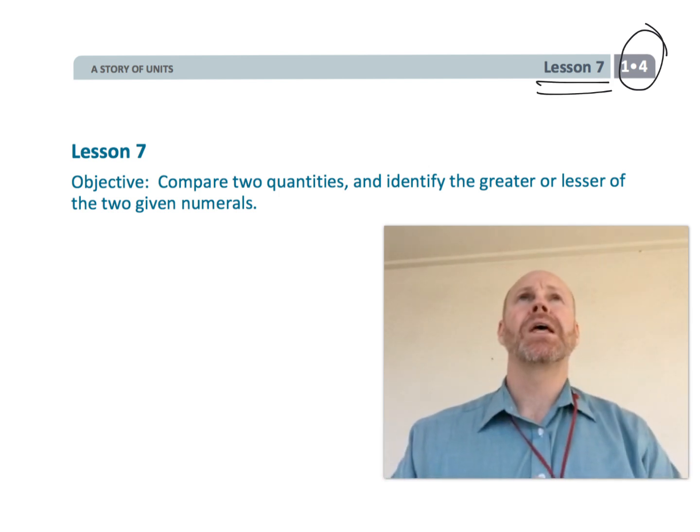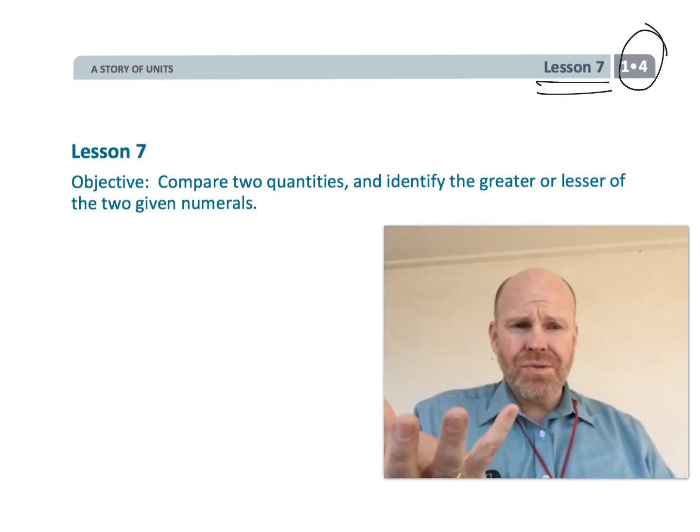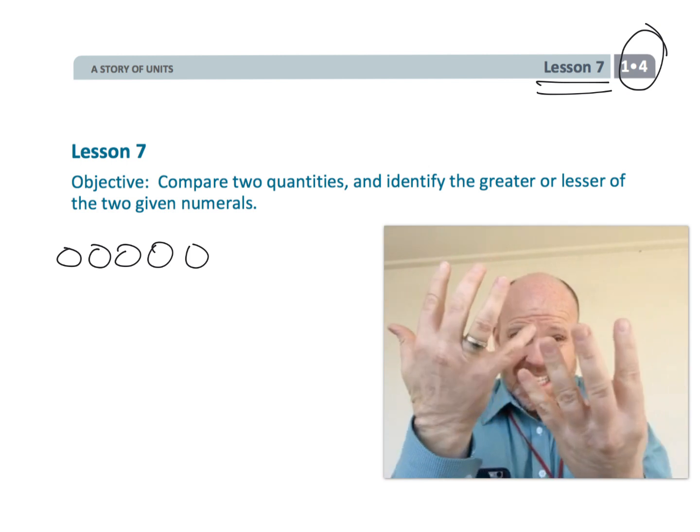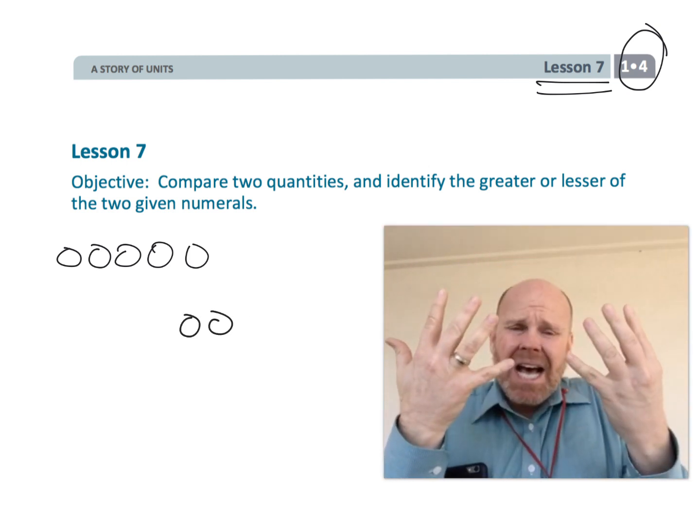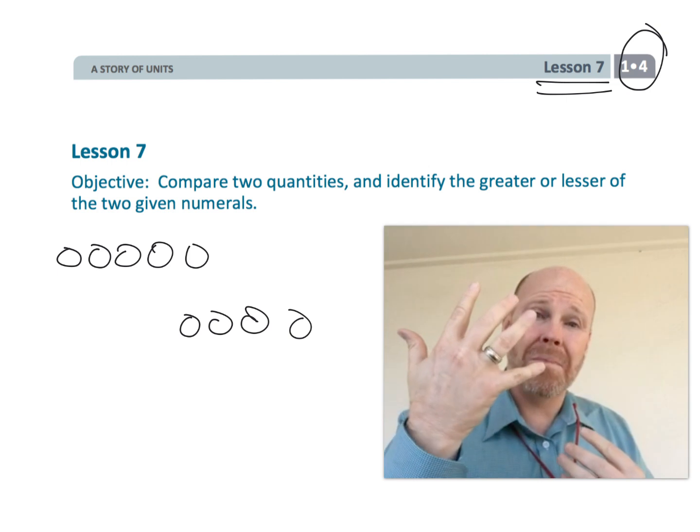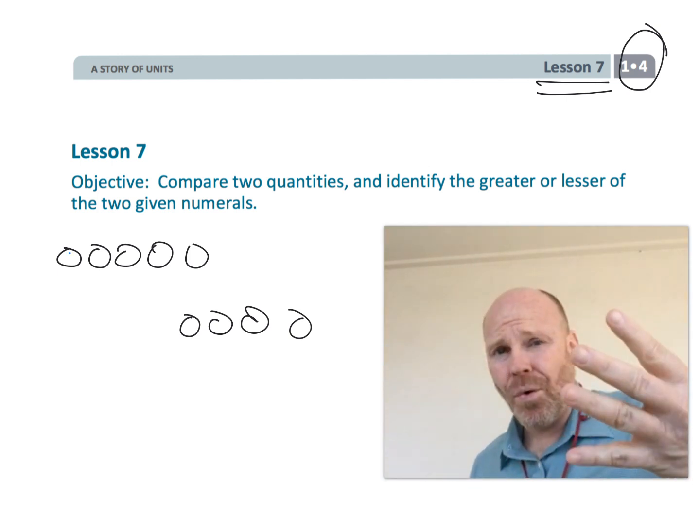The idea is, just because one student has five coins and another student has four coins, that doesn't mean that the student with the five coins has more money than the student with the four coins.